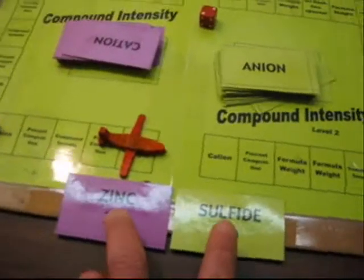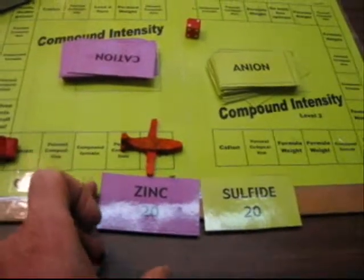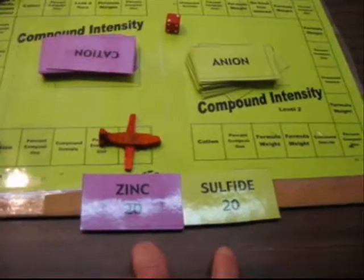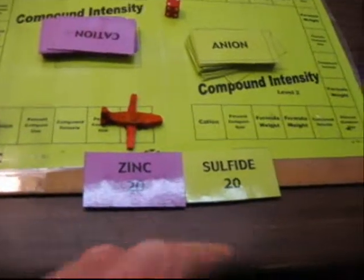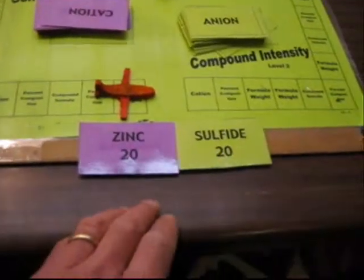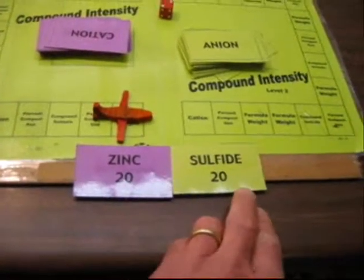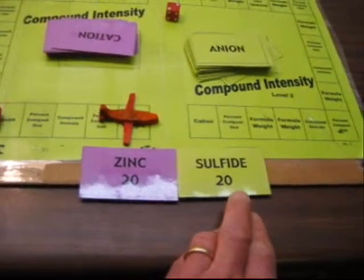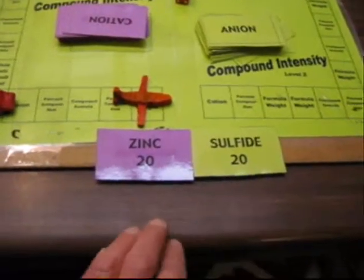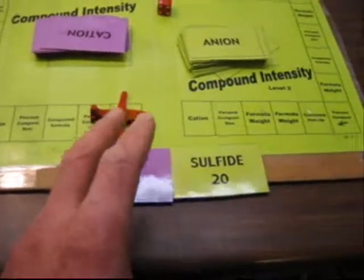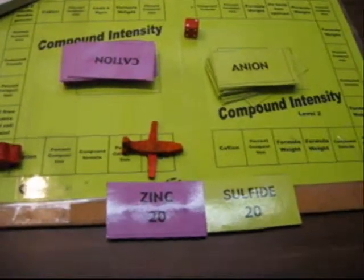Because finding a formula weight is even a more difficult task than just finding the compound formula, these point values then are tripled. If the team was able to successfully come up with the formula weight for zinc sulfide, in this case, we would have 20 plus 20 would be 40, and then we'll triple that value. They'll earn 120 points if they have it correct. If it's incorrect, other teams have the opportunity to steal those points.